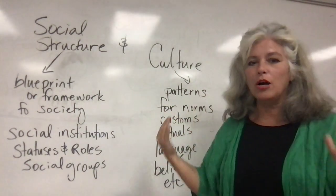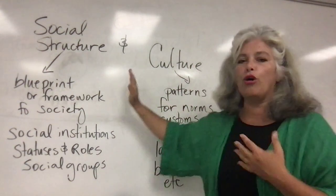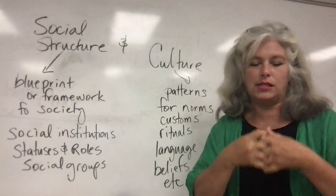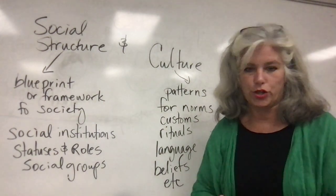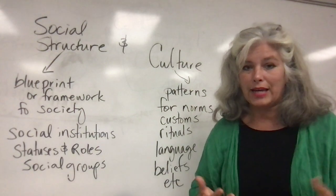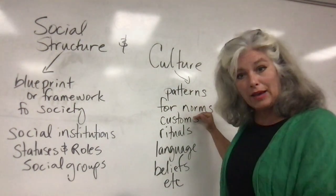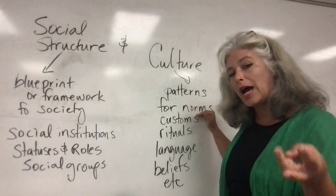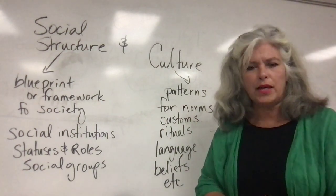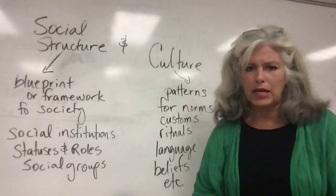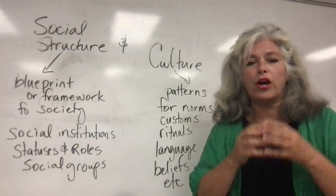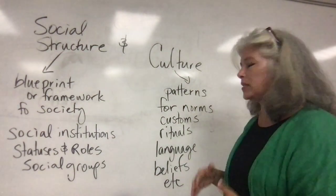Something always closely intertwined with social structure is culture. Culture and social structure overlap so intimately that their marriage is unbreakable. Culture is essentially made up of patterns that people share in society — patterns about norms, which are behavioral standards. Three types of norms are in your textbook. Culture also includes customs, rituals, habits, beliefs, trends, language, and material objects — like a knife and fork compared to chopsticks. Even material objects can be specific to a culture.